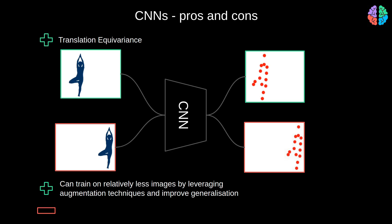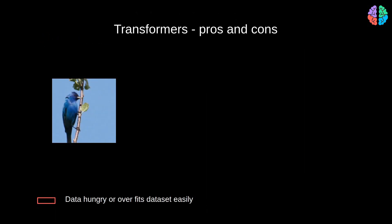But CNNs don't have that much of a model capacity compared to transformers. With the kind of data explosion we are going through, we should be able to learn from billions of images. So, this is where transformers come in handy.